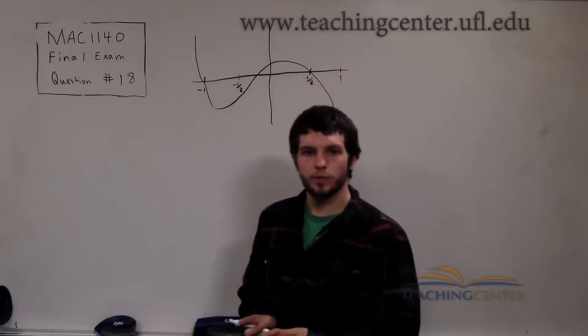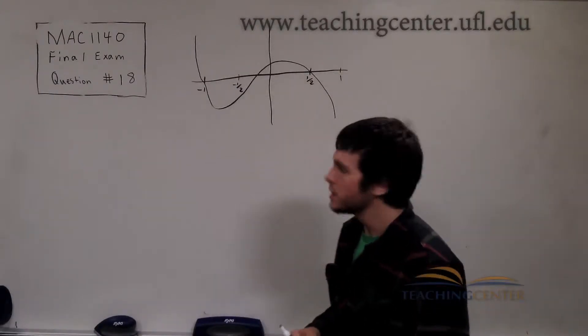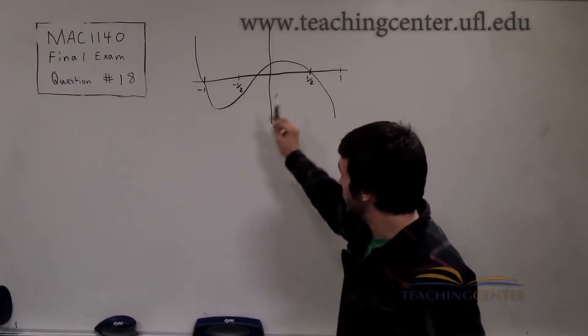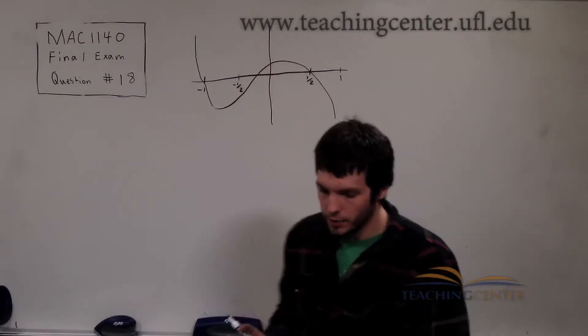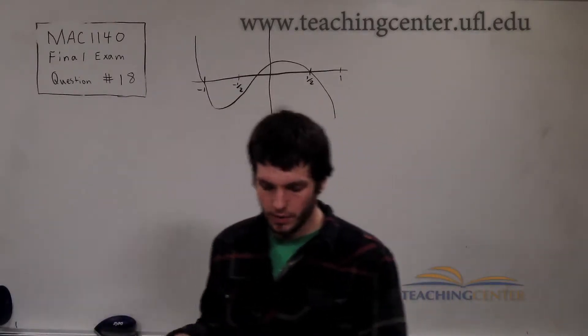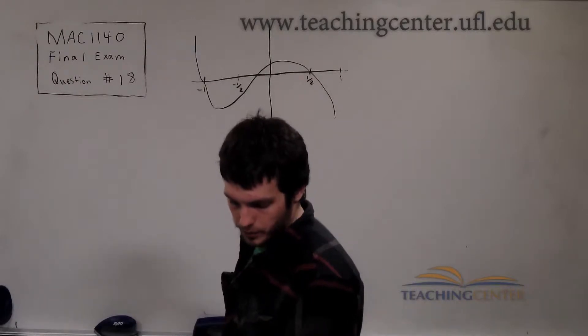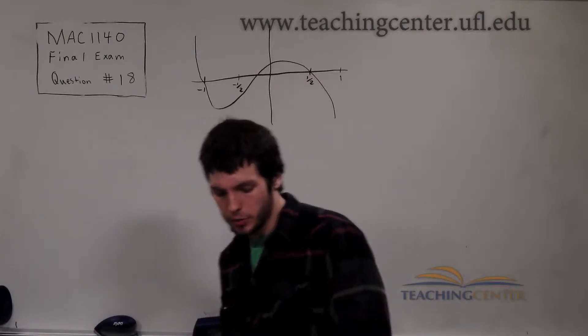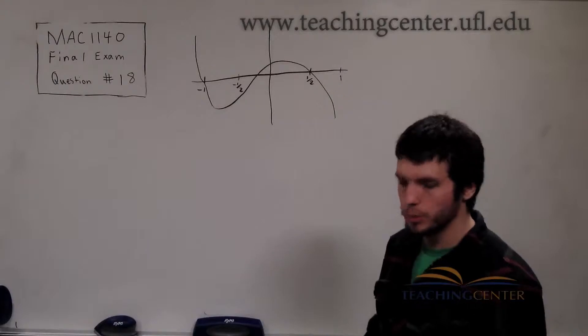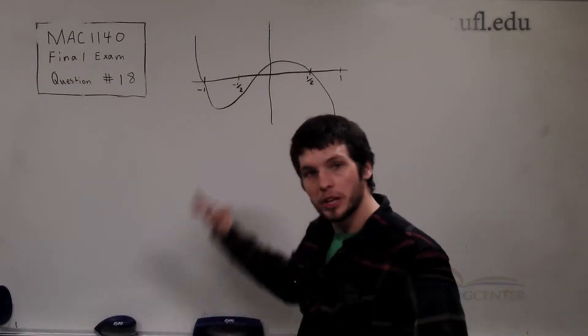This is MAC 1140, final exam, question 18. And here they give us the graph. And they say which function has this graph. And the choices are, well, they give us four polynomial choices. And we're supposed to be able to use process of elimination by looking at the graph.